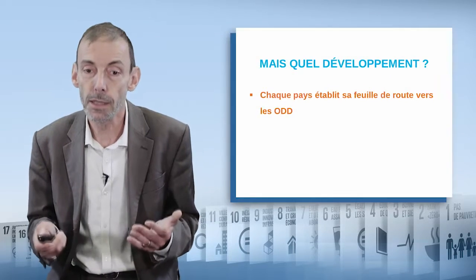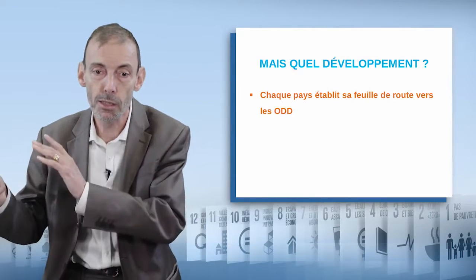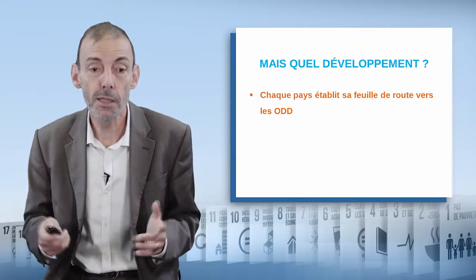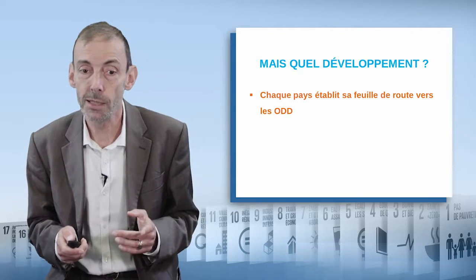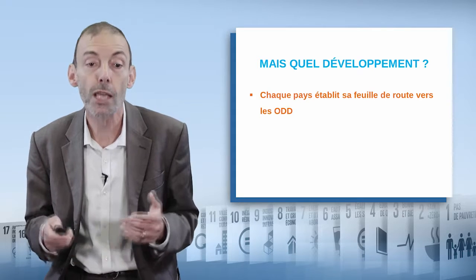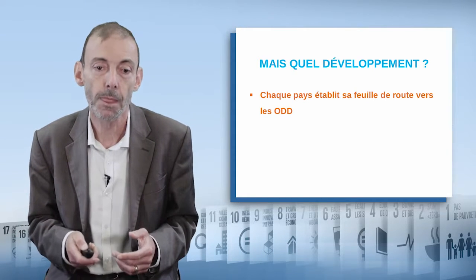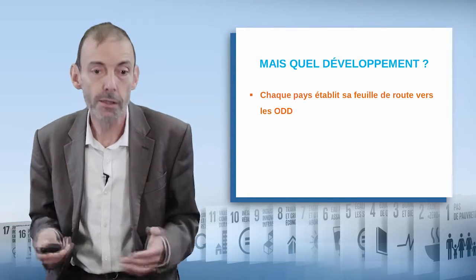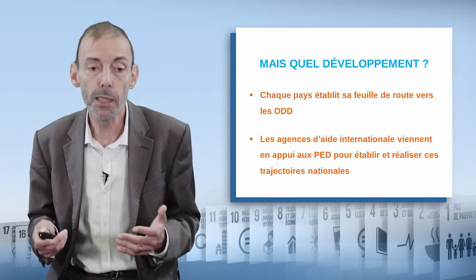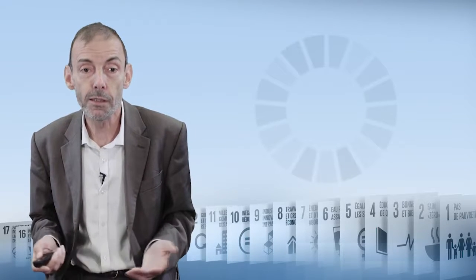So every country needs to draw its own roadmap towards its own SDGs — defining the path towards these goals, particularly in terms of climate under the Paris Climate Accord, also agreed that same year. And the role of international aid agencies is to provide support to developing nations, to help them follow that path and reach the goals nationally and domestically.